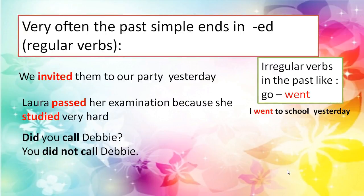Very often the simple past verbs end in ED and we call them regular verbs. We invited them to our party yesterday. Laura passed her examination because she studied very hard. So invited and passed are regular verbs because they end with ED without changing the form of the verb.